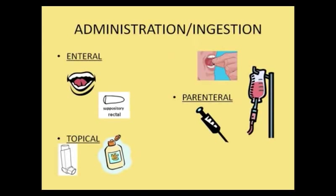The drug will be administered or ingested by various routes. They can go internally, which means through the GI system — we are talking either orally or in some cases rectally. Some rectal routes have systemic actions. Some drugs can be given topically, such as lotions, creams, contraceptive patches, heart medication patches, and inhalers, which are used for asthma.